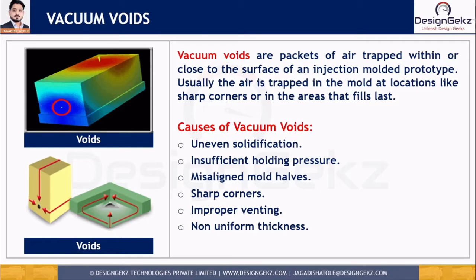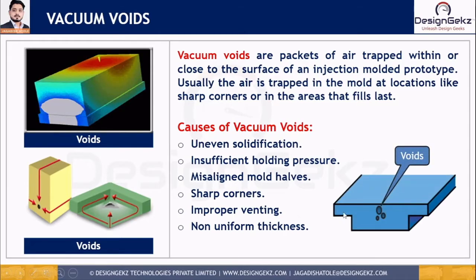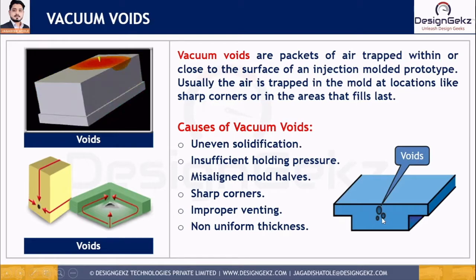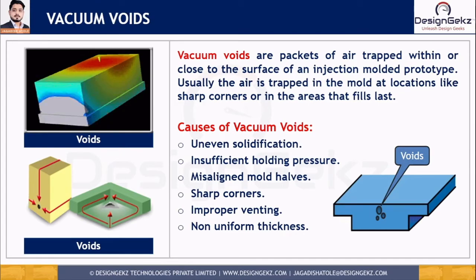What are the remedies? For example, if we design a part with non-uniform thickness, we may get either sink marks or voids. It is therefore very important to maintain uniform thickness as a design engineer when designing the part. That is the thumb rule for the plastic design engineer.